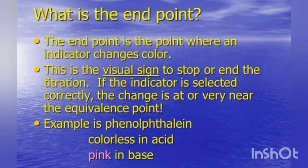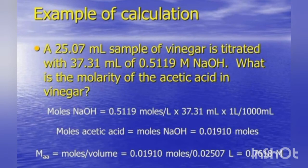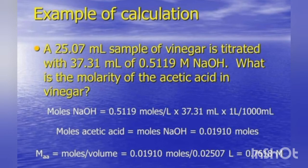An example of an indicator is phenolphthalein — phenolphthalein is colorless in acid while it is pink in base. Here we can see an example where a 25.07 ml sample of vinegar is titrated with 37.31 ml of 0.5119 M NaOH, and we have to find the molarity of acetic acid. First, we find moles of NaOH by multiplying molarity and volume, then moles of acetic acid which equal moles of NaOH, then molarity = moles / volume.